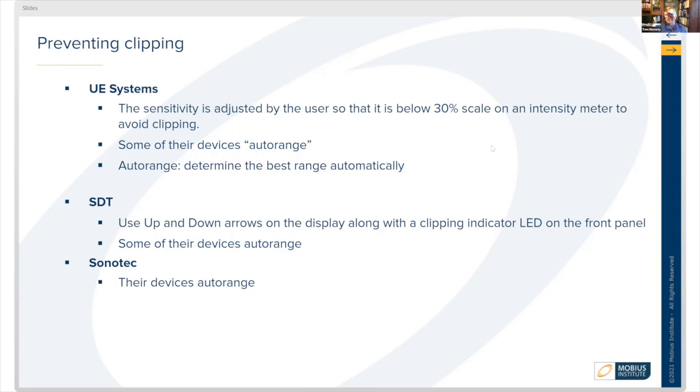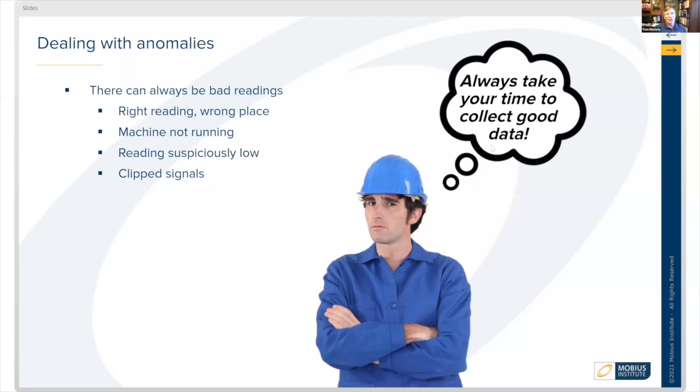With Sonatech, all devices auto-range. There can be anomalies—bad readings can occur. You could take the right reading from the wrong place, collect data on a machine that's not running, or get suspiciously low or clipped signals. Always take your time to ensure you're collecting good data.